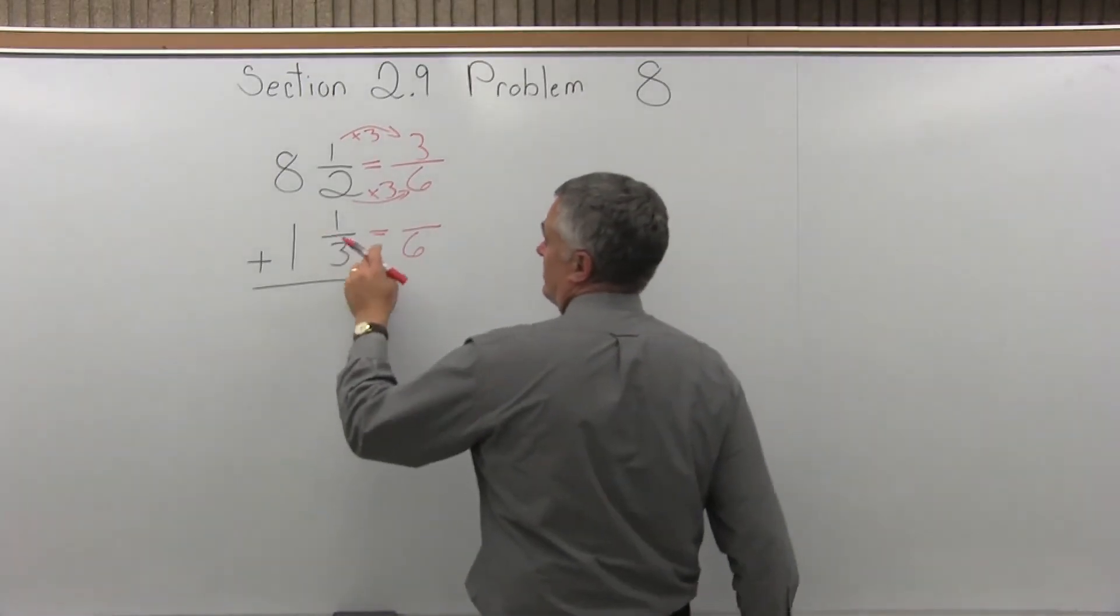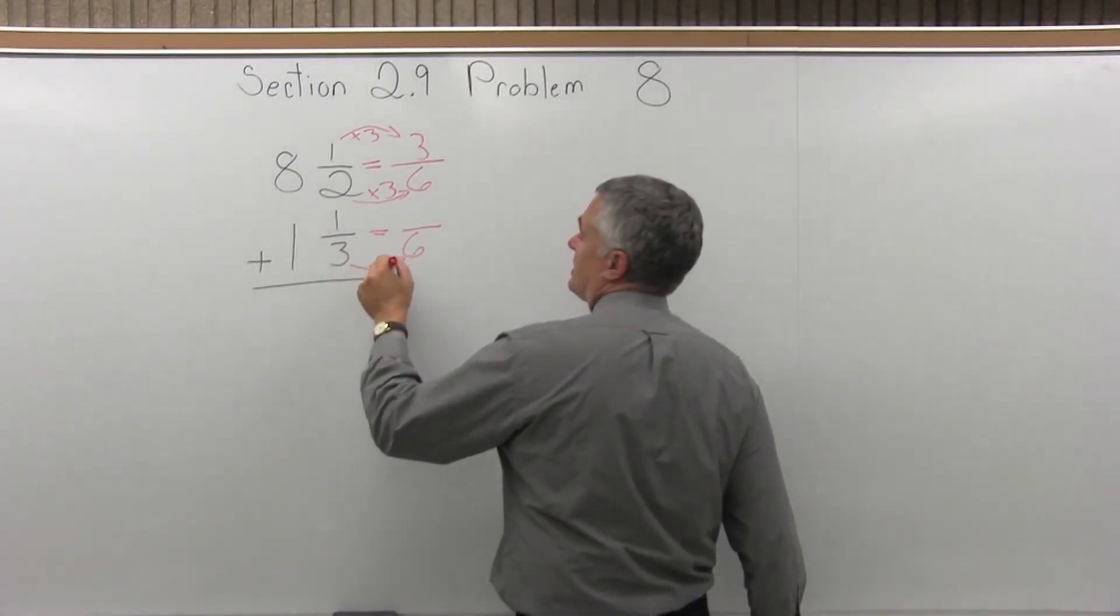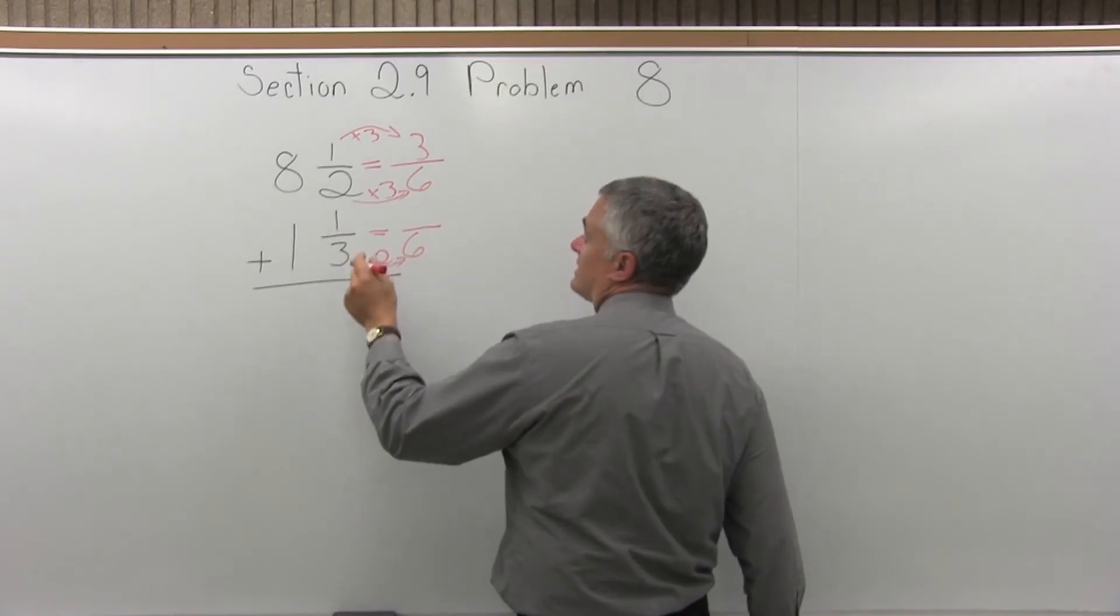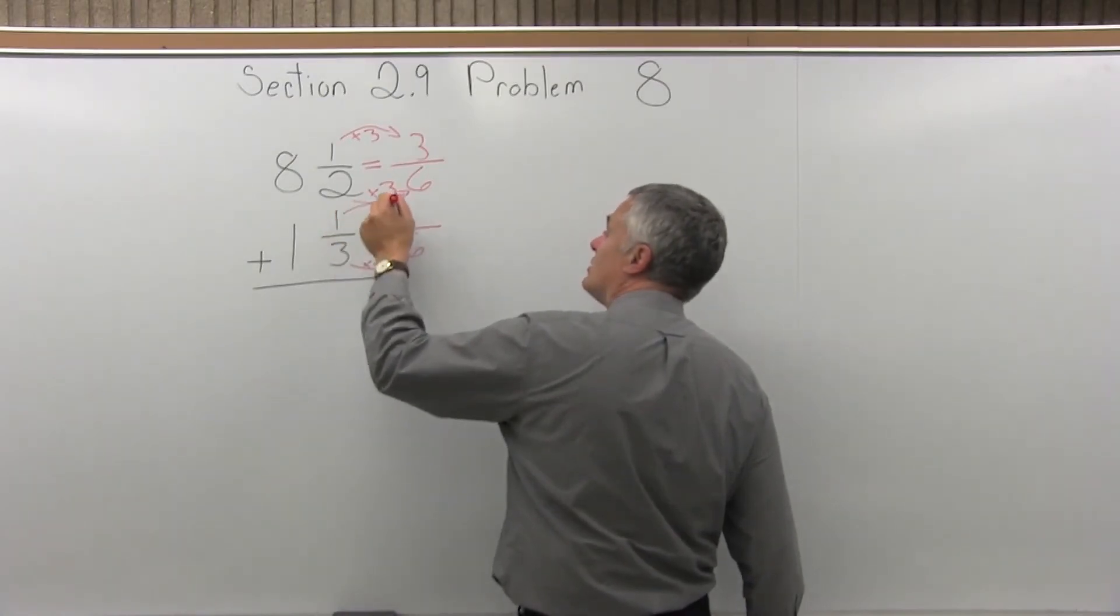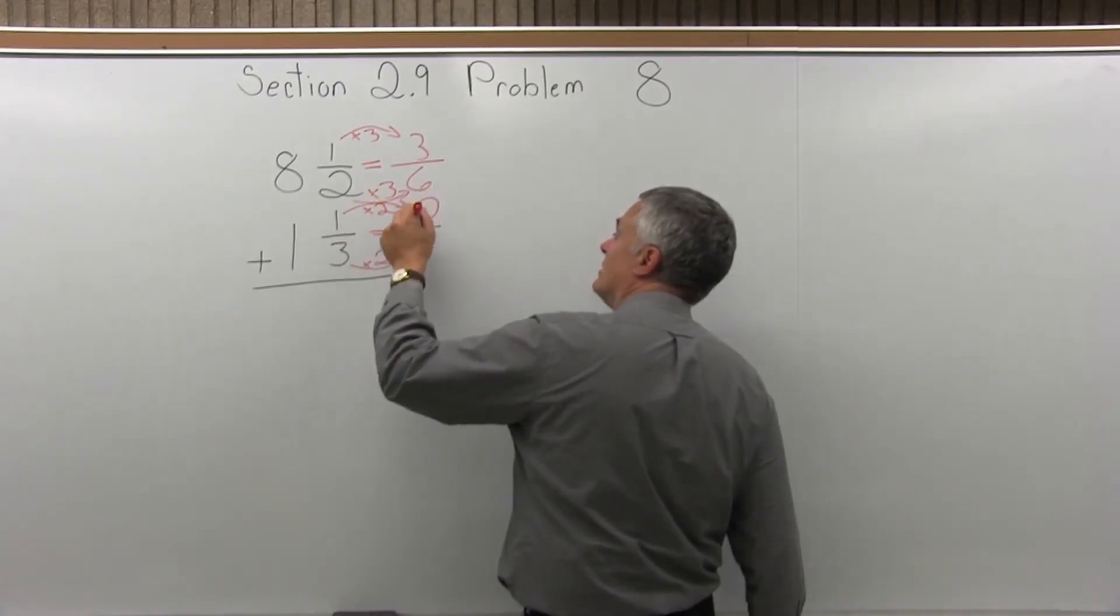And do the same process with the lower fraction, the 1⁄3. So the denominator of 3 times some value is 6, must be times 2. So the numerator gets multiplied times the same value, times 2. 1 times 2 is 2.